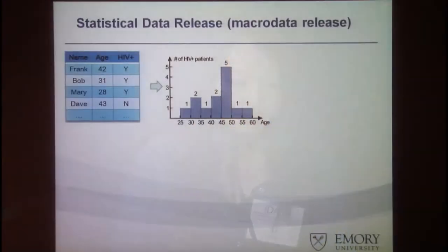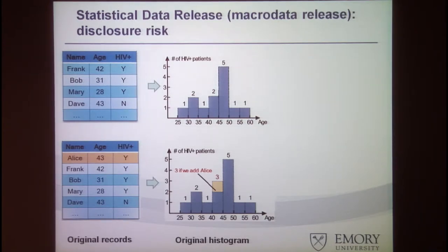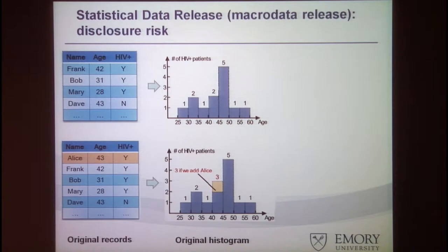However, consider an adversary who knows everybody in the dataset except whether Alice is in it. If we release the same histogram for both databases — one with Alice and one without — the only difference is the count for the age group 40 to 45: two in the first case and three in the second, because Alice has the HIV-positive attribute. An adversary who knows everyone except Alice can deduce Alice's HIV status by comparing the two histograms if they know Alice's age.